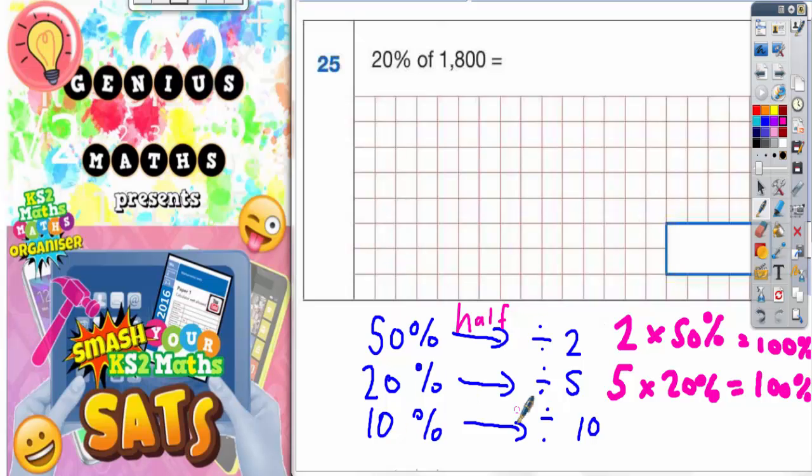If you're finding 10% of a number, you'd have to divide by 10. And it's all because it's all about what gets you back to 100%. So 10 lots of 10% will get you back to 100%.